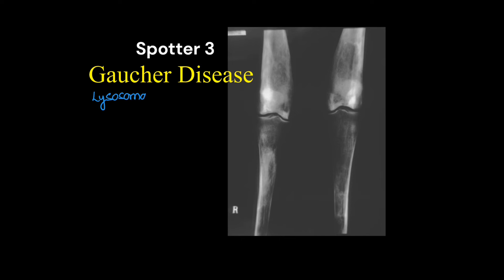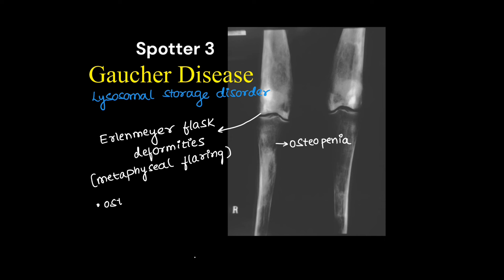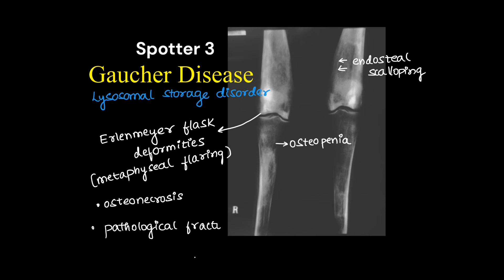The third spotter was Gaucher's disease, which is a lysosomal storage disorder — a systemic disorder affecting almost all systems of the body. Discussing the skeletal manifestations: there are Erlenmeyer flask deformities, which is metaphyseal widening or flaring with diaphyseal narrowing. There will be osteopenia, osteonecrosis may be present, endosteal scalloping, and pathological fractures may or may not be seen.